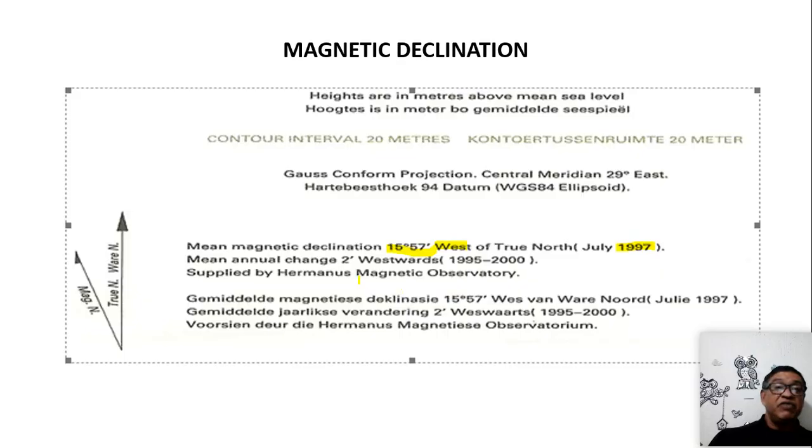And for every year, it changes two minutes westwards, means it increases by two minutes westwards for each year. So we're going to use this information to calculate the current magnetic declination.